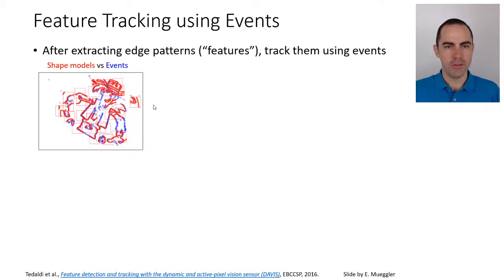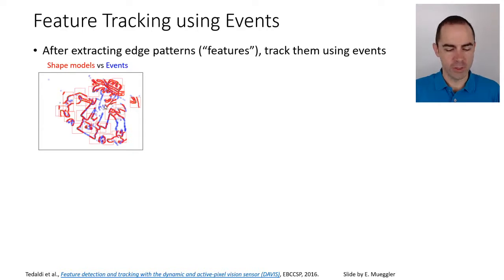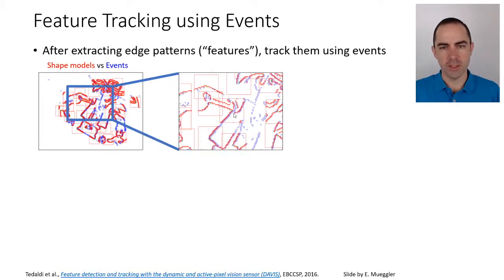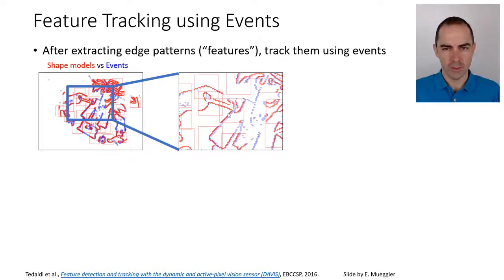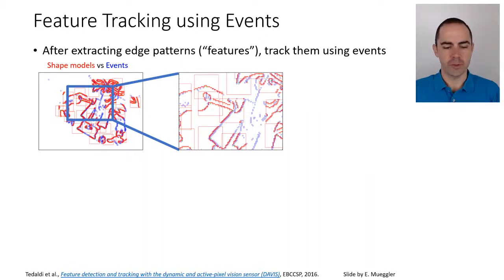Now let's compare the shape model with the events. The shape model is shown in red and the events from the event camera are in blue. Zooming in, we see that at initialization — close to the frames — there is good coincidence between the edge patterns extracted from the frames and the events triggered by the event sensor. This confirms that events represent the edges of a natural image, validating that we can extract edges from frames and track them using events.